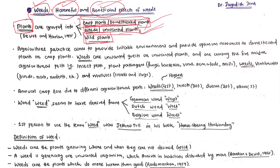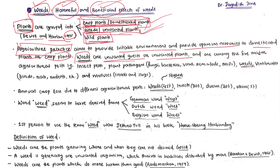Dewitt and Harlan in 1975 grouped plants into three different categories: crop plants (domesticated plants), weeds (unwanted plants in our crop field), and wild plants. Agriculture generally aims to provide a suitable environment and optimum resources to domesticated or crop plants to get maximum output. Weeds are the unwanted plants which compete with crop plants for those resources.